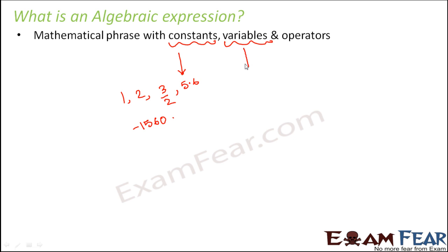Next is variables. So variables are those values whose value keep changing depending on where they are. For example, x, y, z, b, q, r, a, b, c. So generally we denote variables with alphabets.